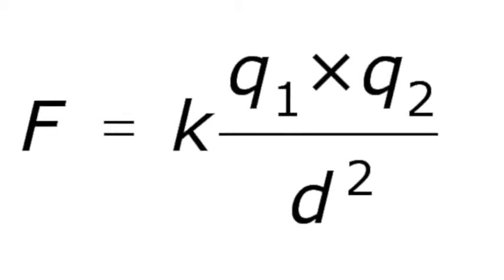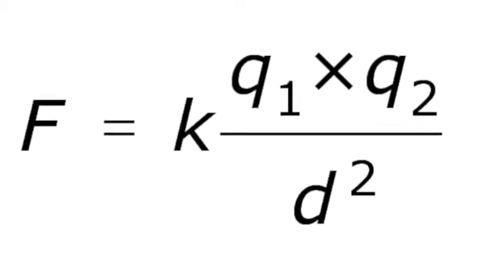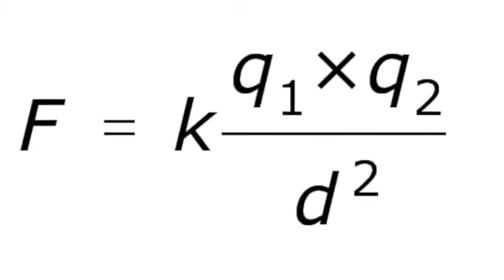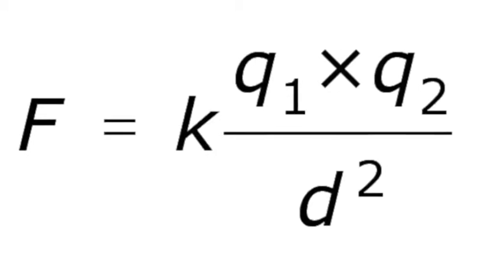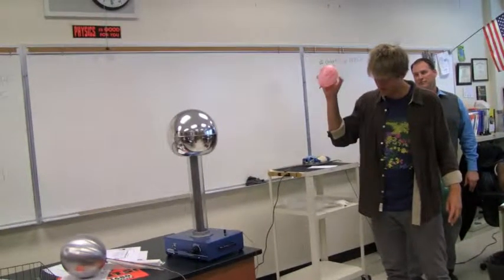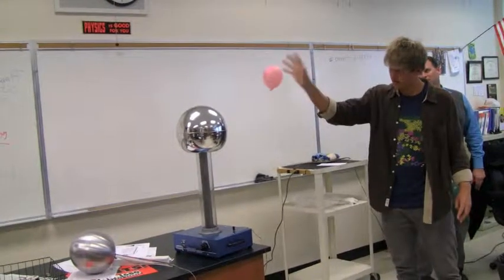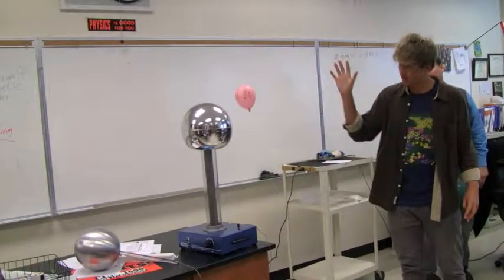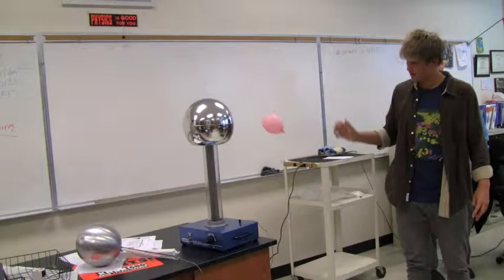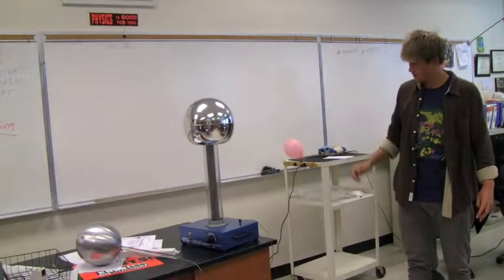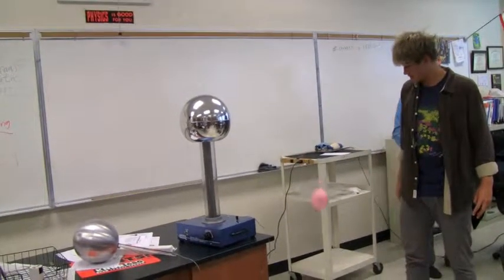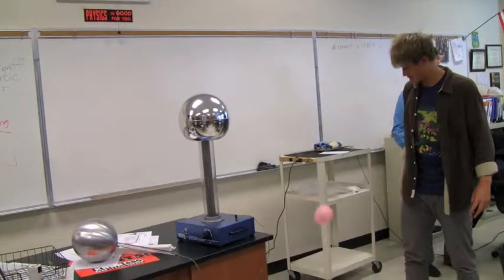A greater distance between two objects will mean a lower electrical force. As the distance shortens, the electrical force becomes greater. In this case of repulsion, as the balloon gets closer to the Van de Graaff, the electrical force between the two becomes greater, so they repel because the electrical force is so much greater than when the two were at a farther distance.